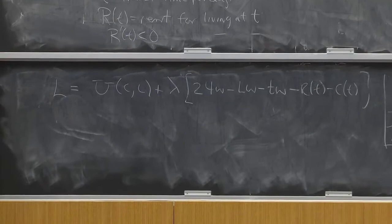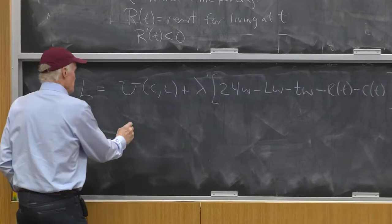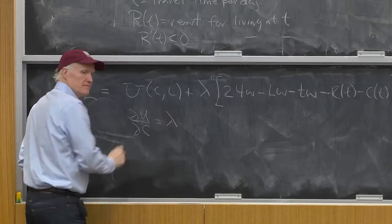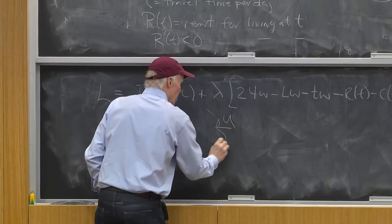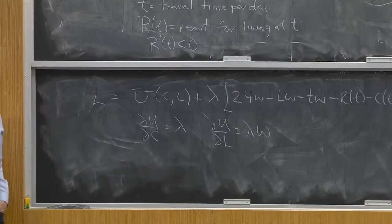So what are my first order conditions? Partial U partial C equals lambda. Not very surprising. Partial U partial L equals lambda W. Also not surprising. Those are the usual labor supply first order conditions.